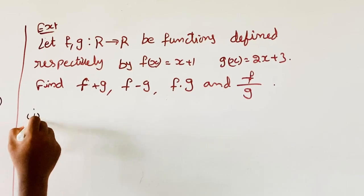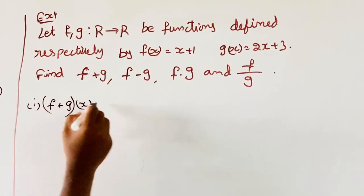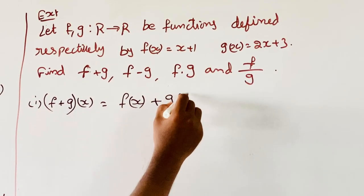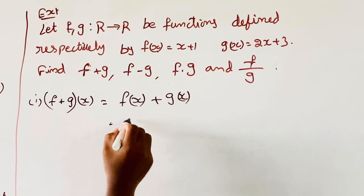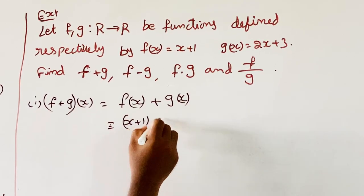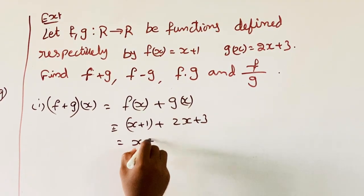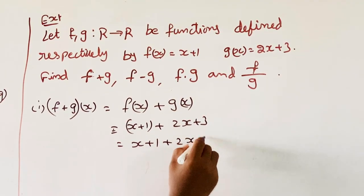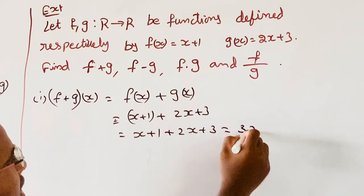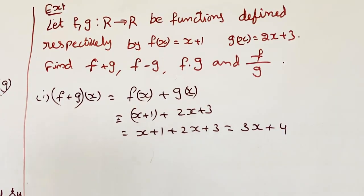First, F plus G of X equals F of X plus G of X. F of X is X plus 1 and G of X is 2X plus 3. That equals X plus 1 plus 2X plus 3, which equals 3X plus 4.